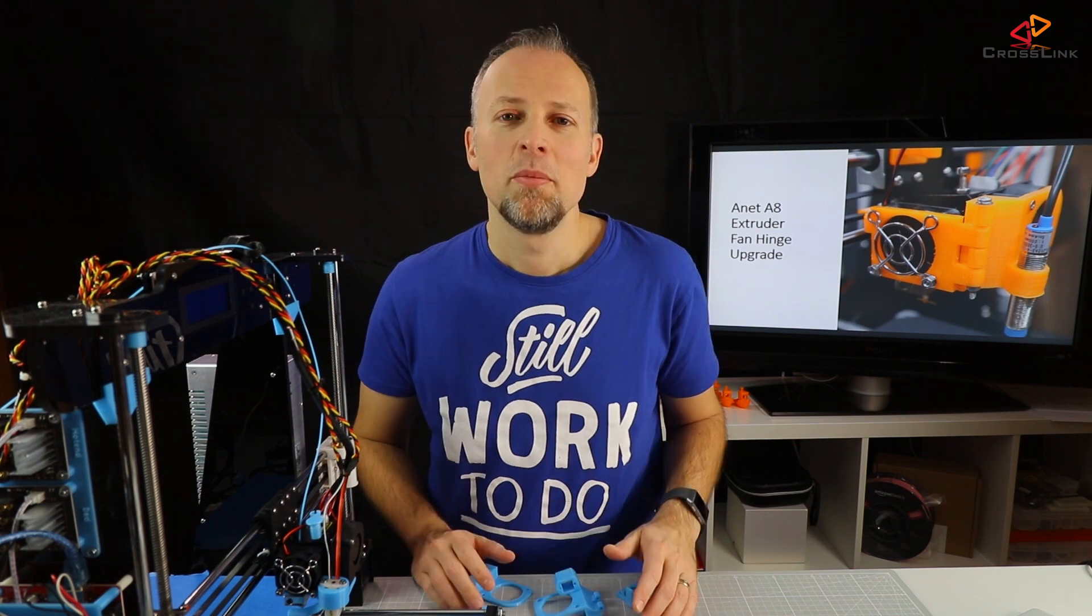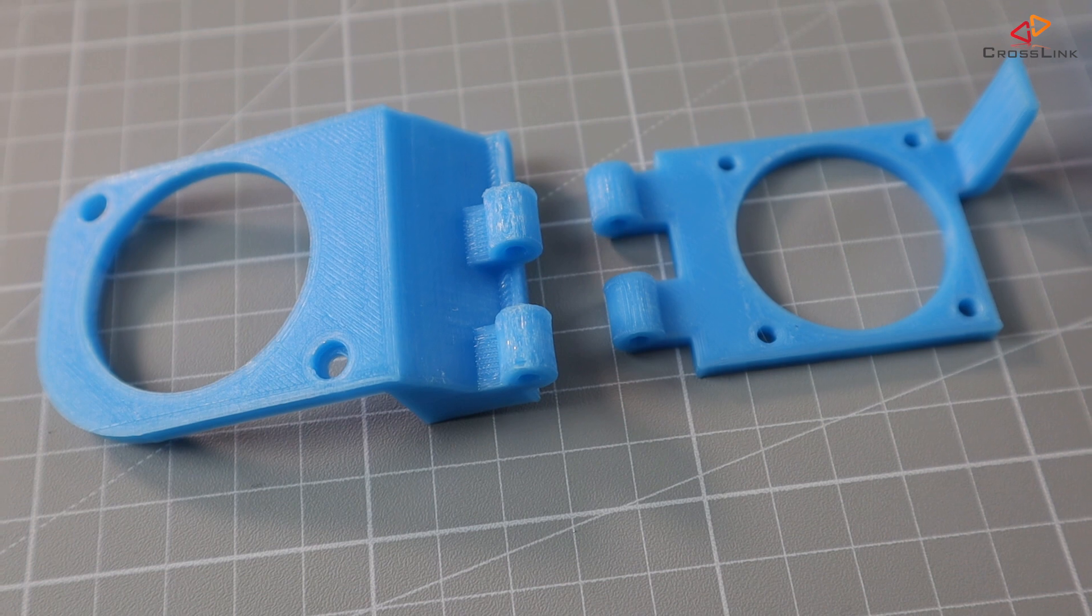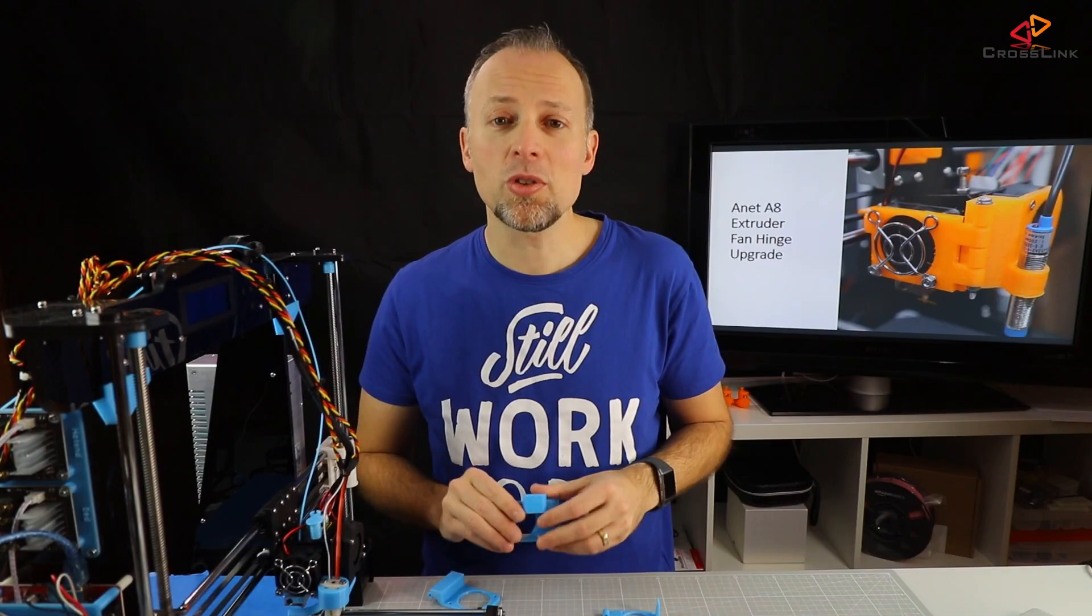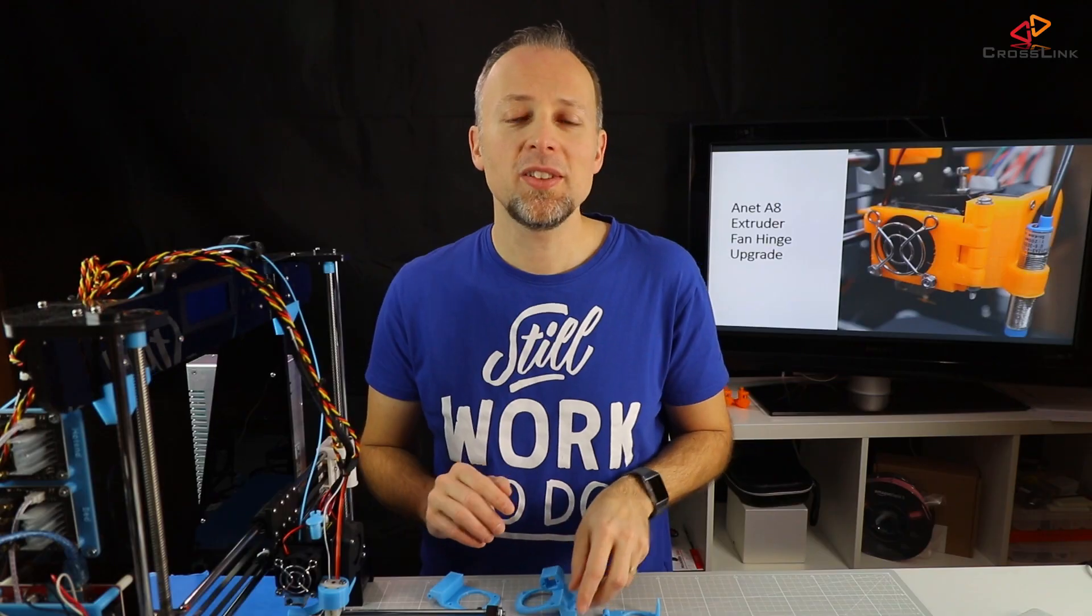First, let's see what we need to do this modification. Print out the two parts for the fan hinge from Thingiverse first. There is also a customized version available which holds the 3D touch sensor. I've linked it in the description.